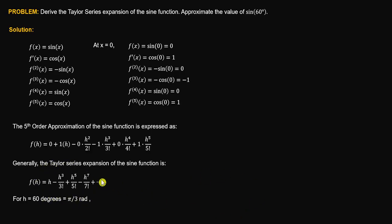To compute the approximate value of sine of 60 degrees, f of pi over 3 is equal to the Taylor series expression. Substituting h equal to pi over 3, that gives us an approximate value of 0.8660.